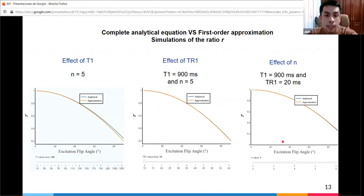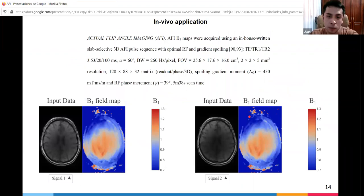Finally, this is an in vivo application. Matthew acquired this data. He shows the input data, signal 1 and signal 2. This is the field map, the B1 field map, calculated as the ratio of the distribution of the actual flip angle to the nominal flip angle, which was set to 60 degrees.